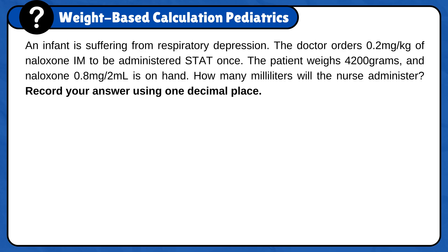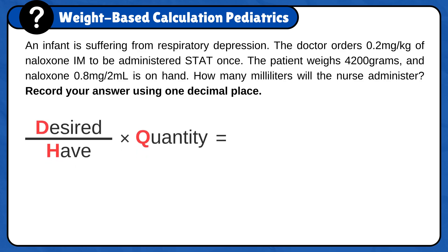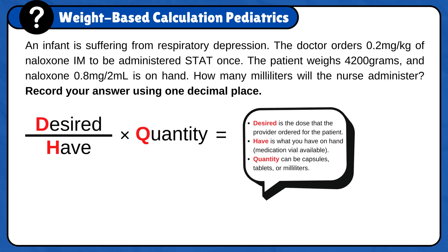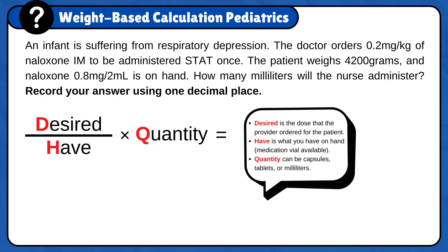First, set up the formula: desired over half times quantity. Desired is the dose that the provider ordered for the patient. Half is what you have on hand, and quantity can be capsules, tablets, or ml. There is a memory trick to remember this formula.